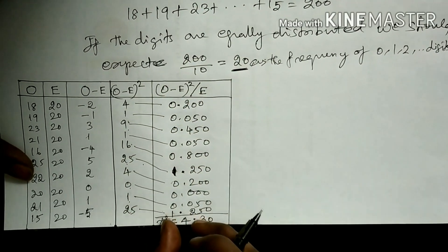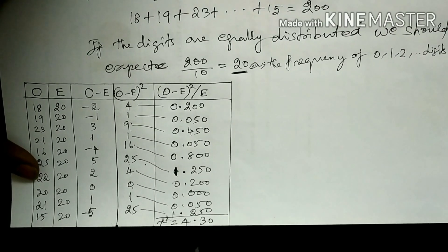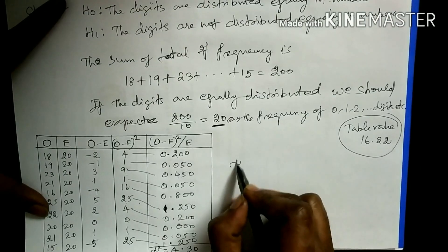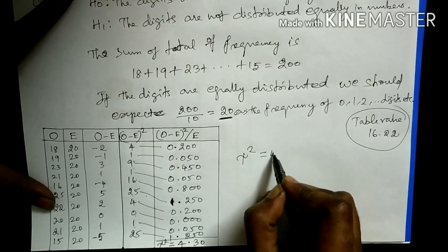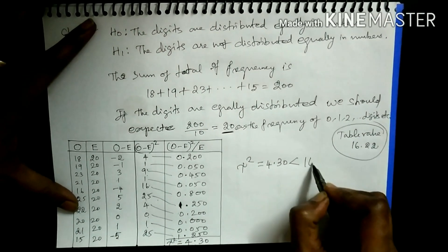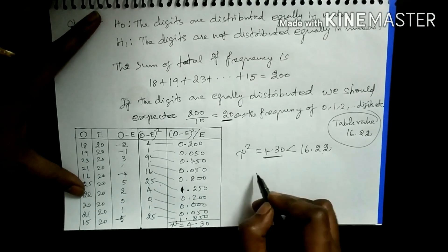Just add all these values. We will get 4.30. This is chi square value. Now, in the question, the calculated value is 4.30, is less than the given table value, 6.22. It is less than the table value.